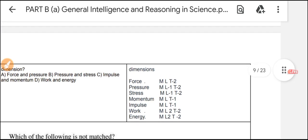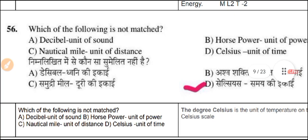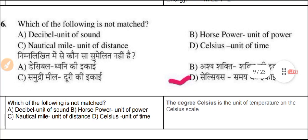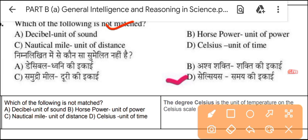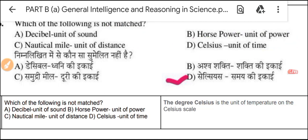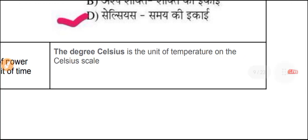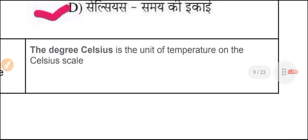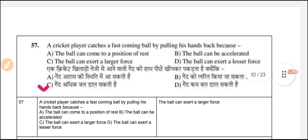Question 56: Which of the following is not matched as per behavior? The unit of sound is decibel — correct. Horsepower is a unit of power — correct. Degree Celsius is not a unit of time; it is a unit of temperature. So degree Celsius is the answer — it is a unit of temperature under the Celsius scale.